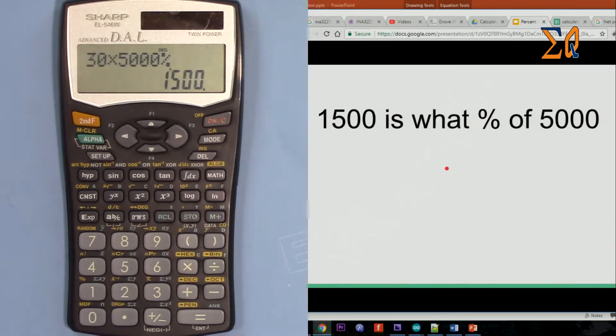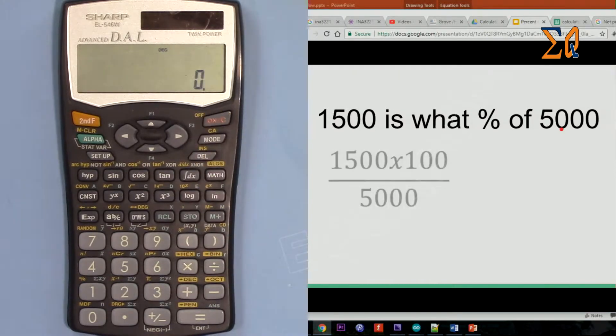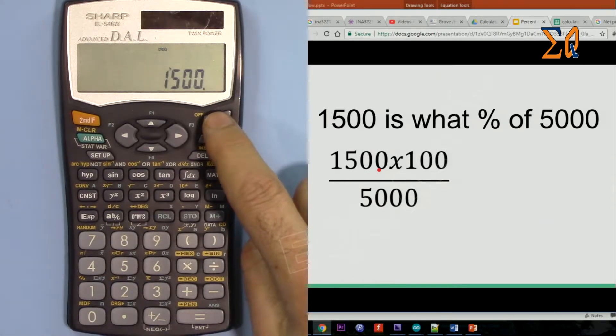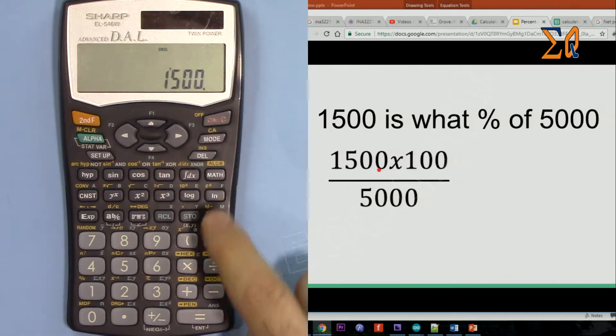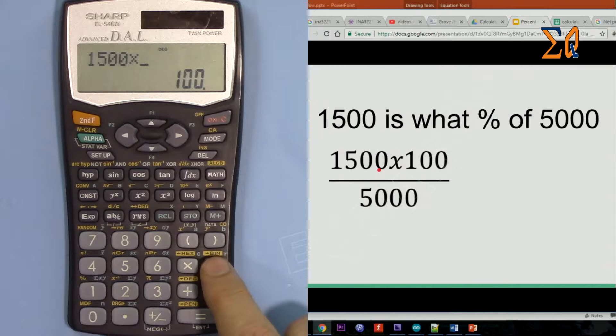Now let's see how we can do it with the calculator. 1500 is what percent of 5000, we already know it's 30% but let's see. So 1500 times 100 divided by 5000, so the answer is 30.